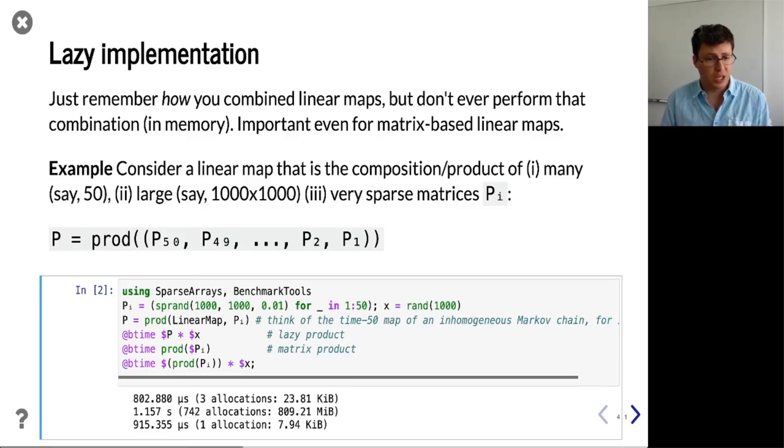For example, consider the product of 50 large and very sparse matrices. And then here in the code snippet, we're comparing applying the lazy product of these sparse matrices to a vector x versus computing the actual matrix product and then applying to x. So laziness is key here for performance.